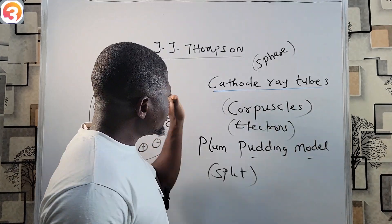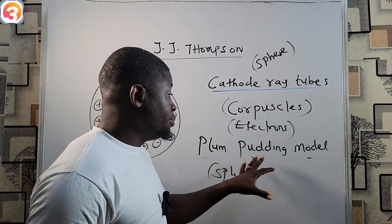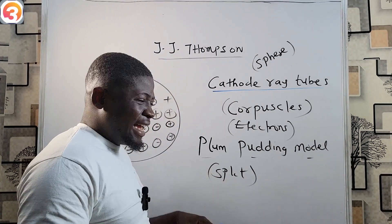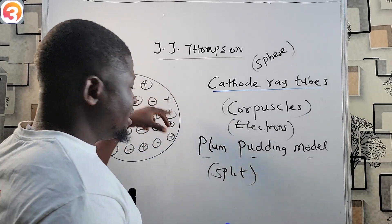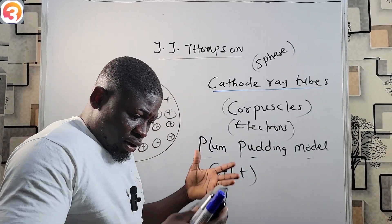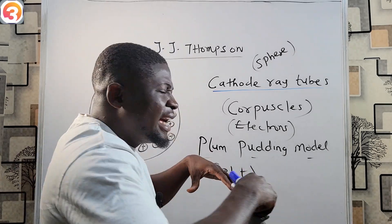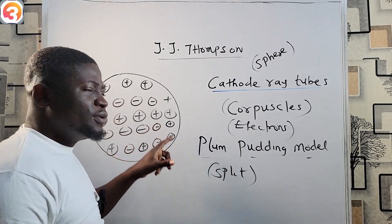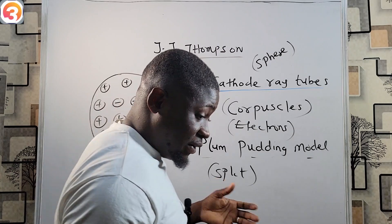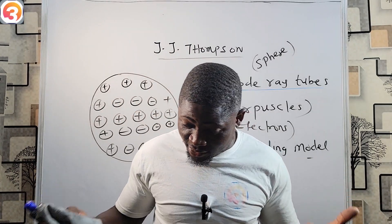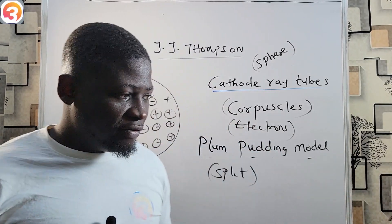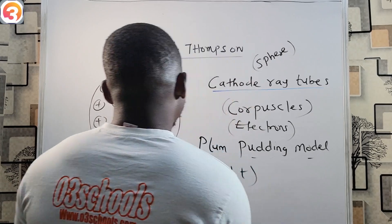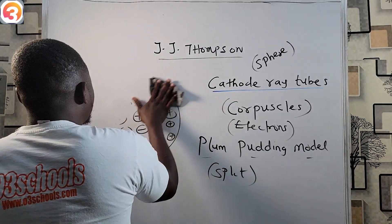So to recap: JJ Thompson's model is called the plum pudding model. The model assumed that electrons are embedded in a positively charged sphere, in which negatively charged electrons are embedded. JJ Thompson is regarded as the first man to split the atom, and he also discovered cathode ray tubes. Now let's go to the last part of this class on JJ Thompson's model.